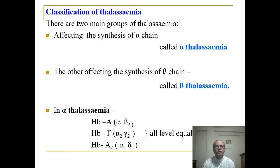Classification of thalassemia: there are two main groups. One group affects the synthesis of alpha chains, called alpha-thalassemia. The other affects the synthesis of beta chains, called beta-thalassemia. In case of alpha-thalassemia, since all hemoglobin types — A, F, and A2 — contain alpha chains, all levels will be equally reduced.